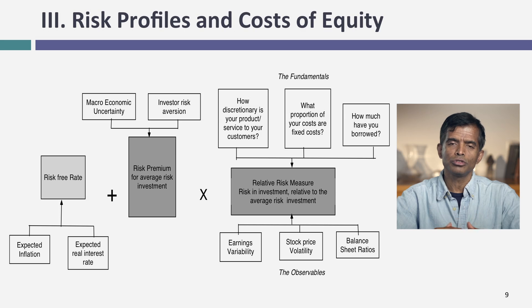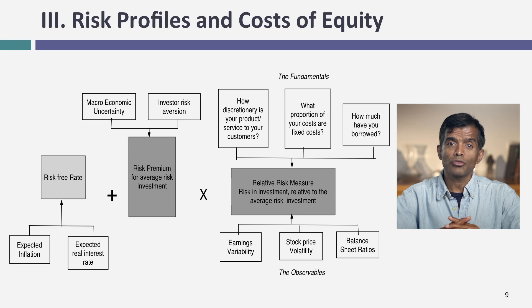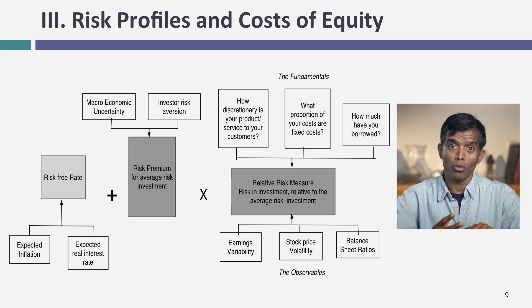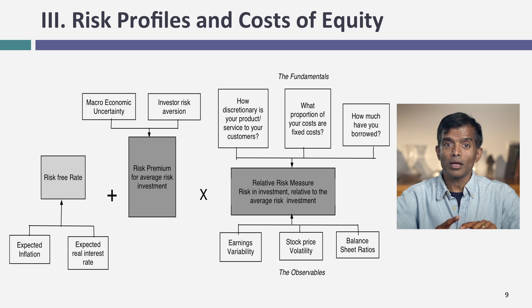Third, we talked about converting that risk measure into a cost of equity. There are three key inputs: a risk-free rate that's driven by what currency you choose to do the assessment in, driven by expected inflation and expected real interest rate in that currency. There's a beta — the best way to think about a beta is as a relative risk measure. Rather than think of it coming from a regression, think about the fundamentals that drive betas. What kind of business are you in? The more discretionary your product or service, the higher your beta. What kind of cost structure do you have? The more fixed cost you have, the higher the beta. How much have you borrowed? Trying to estimate a beta from a regression is a dangerous road to take.